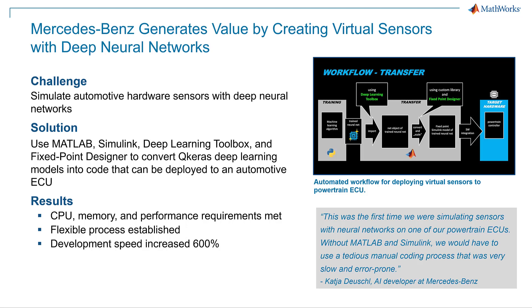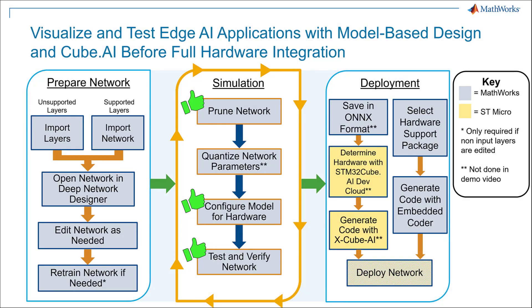Before getting into the details of the workflow shown in this video, let me first provide a quick overview for deploying a neural network to an STM32 device. The first step is designing and training a neural network, leveraging AI development techniques to optimize its performance. This can be done in MATLAB and Simulink or imported from an open source format using a deep learning converter. The network then undergoes compression using techniques such as projection or Taylor pruning and quantization to reduce its size and make it suitable for deployment on the STM32 device. Once the network is compressed, it can be simulated and tested to see if there is any loss in prediction accuracy. After testing, the network undergoes code generation using either our Embedded Coder tool or XcubeAI from STMicro. In this video, we will be using Embedded Coder for code generation. This generated code is then deployed to an STM32 via a MathWorks provided hardware support package or with XcubeAI.